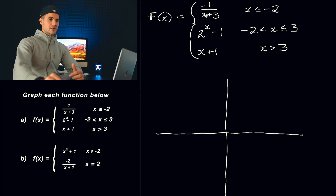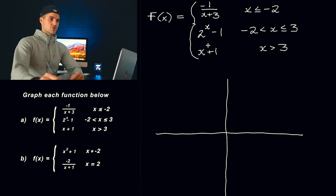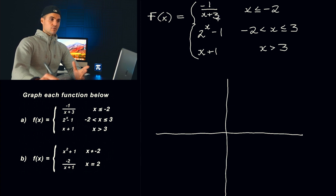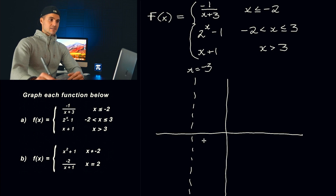The negative one over x plus three — just because it's a little bit more complex, we're going to have a vertical asymptote, horizontal asymptote, etc. So I'm going to graph it in general first and then limit the domain according to the piecewise function. The parent function is one over x, the reciprocal function — we're shifting it three to the left, so we're going to have a vertical asymptote at negative three, and then the negative one reflects it in the x-axis.